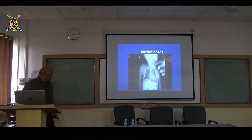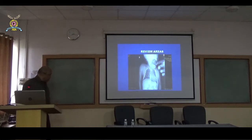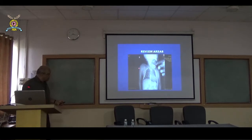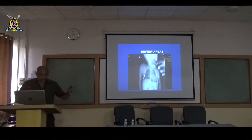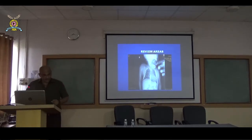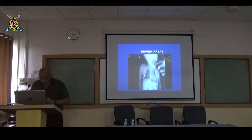Look at this X-ray of the chest — the lung fields appear clear. But when we review the areas and look at the bones, look at the upper end of the humerus, we find a lytic area and soft tissue swelling in the upper end of the humerus. This is due to tuberculosis of the shoulder joint. So review areas need to be seen when an X-ray is essentially appearing normal.